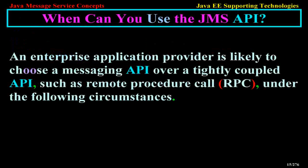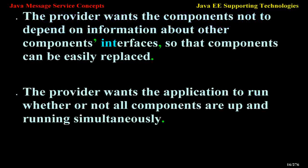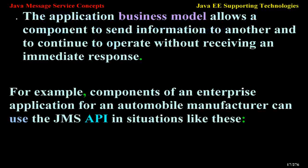When can you use the JMS API? An enterprise application provider is likely to choose a messaging API over a tightly coupled API such as remote procedure call (RPC) under the following circumstances: the provider wants components not to depend on information about other components' interfaces so that components can be easily replaced; the provider wants the application to run whether or not all components are up and running simultaneously; or the application business model allows a component to send information to another and continue to operate without receiving an immediate response.